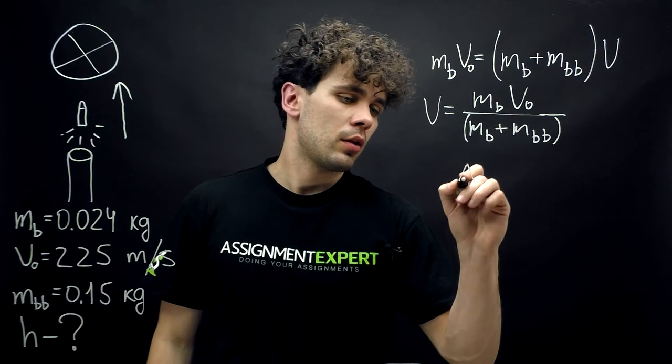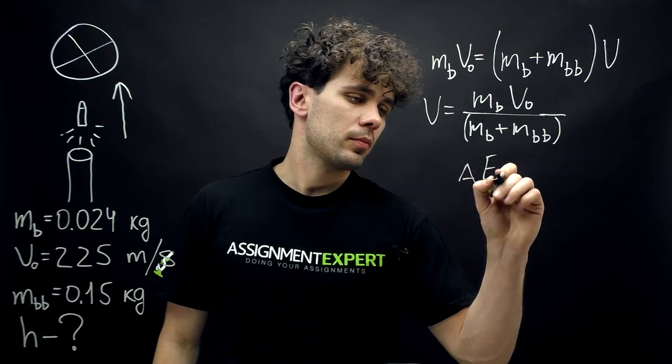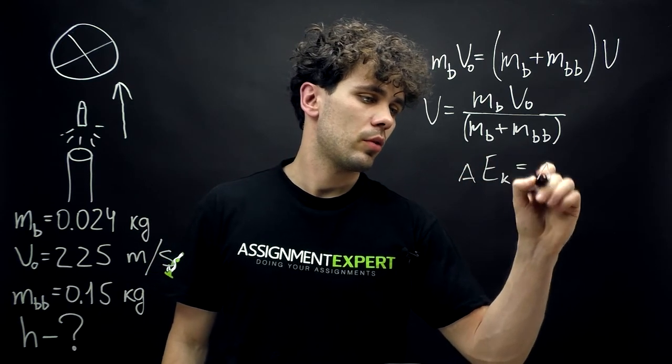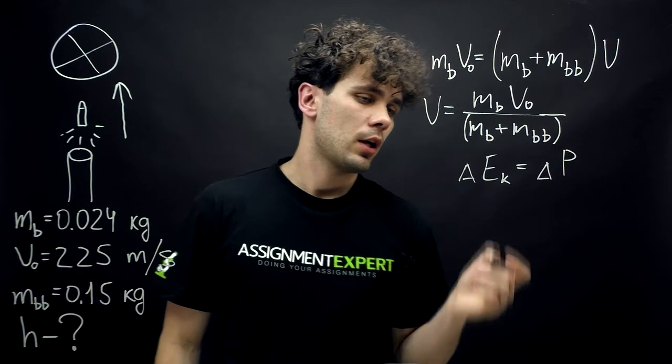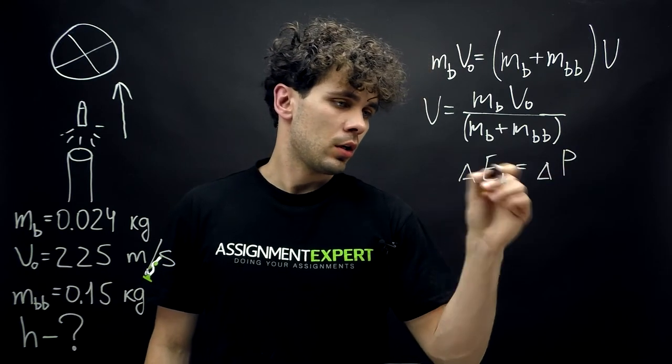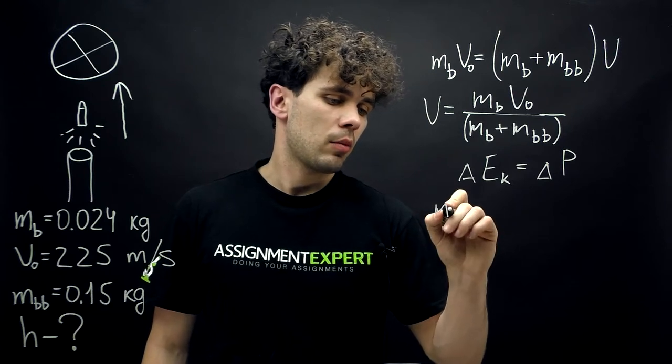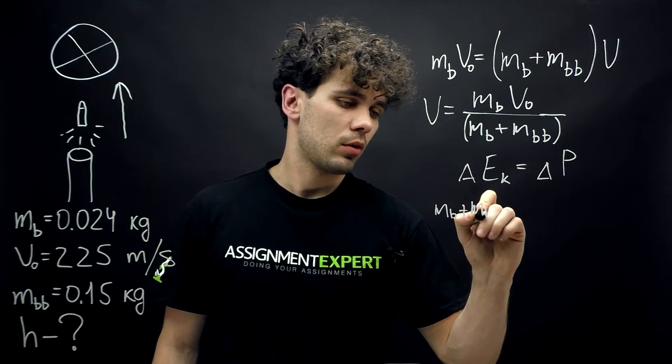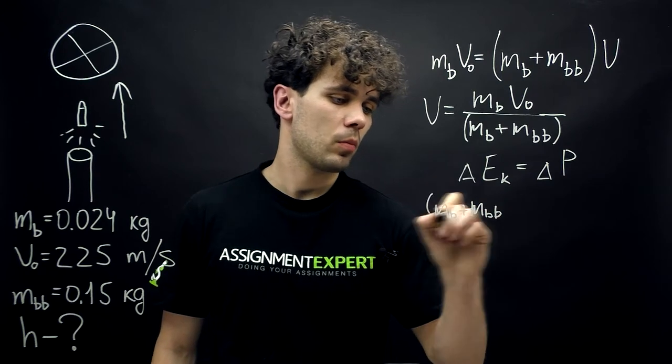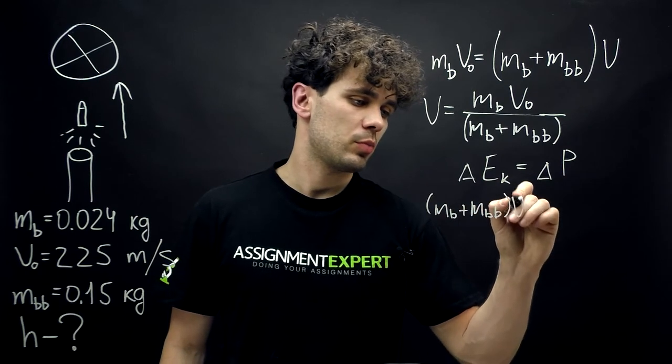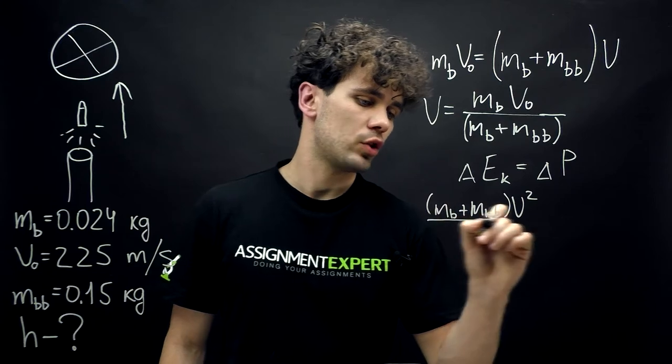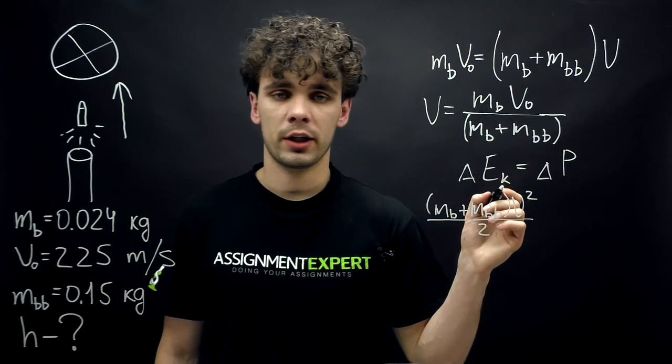So, the change of the kinetic energy is equal to the potential energy. And this gives us the kinetic energy of M of the bullet plus M of the baseball times their speed squared over 2. This is our kinetic energy.